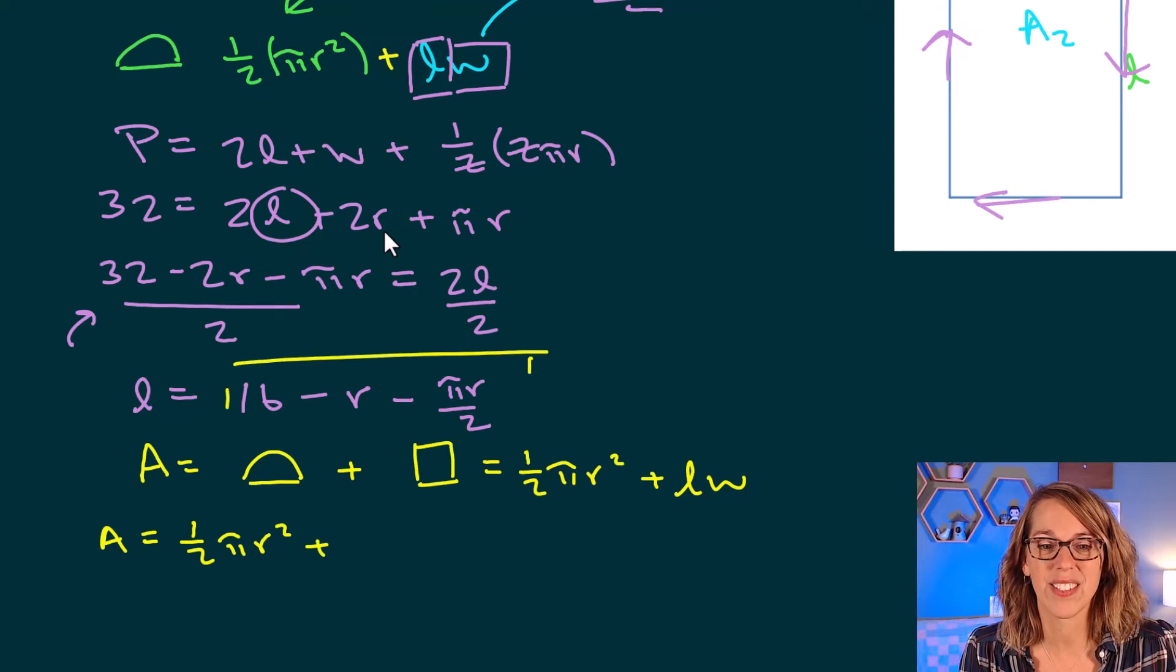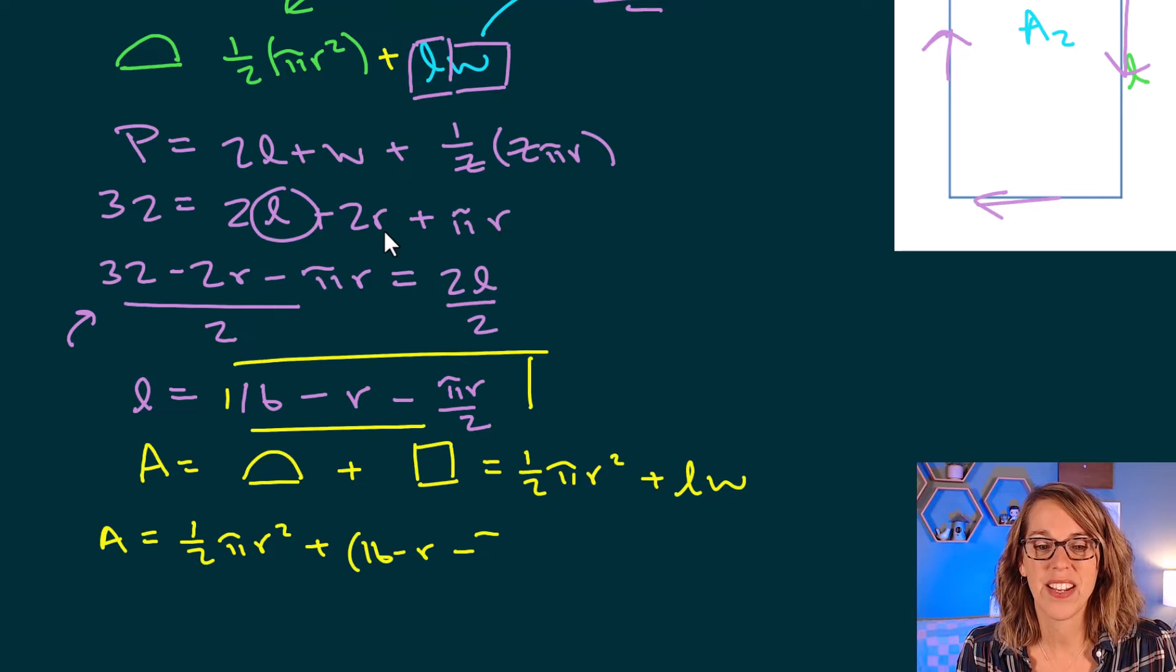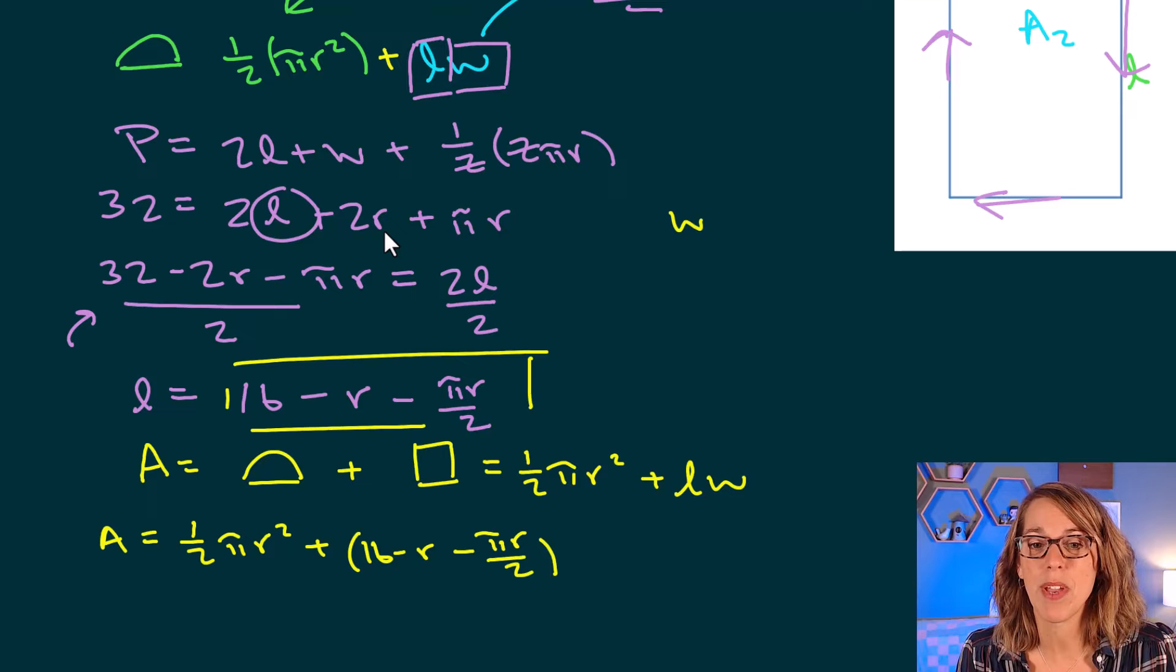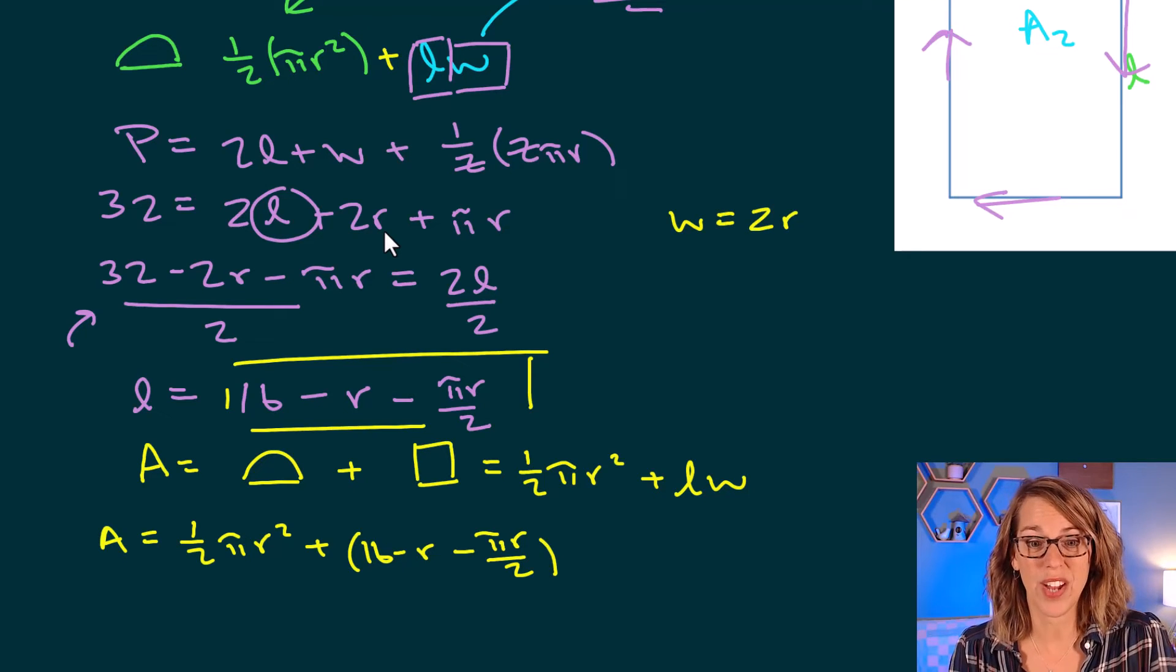Here's my length. So I can go ahead and replace length for 16 minus r minus pi r divided by 2 times my width, but I was given that my width was equal to the diameter, which is equal to 2 times the radius.